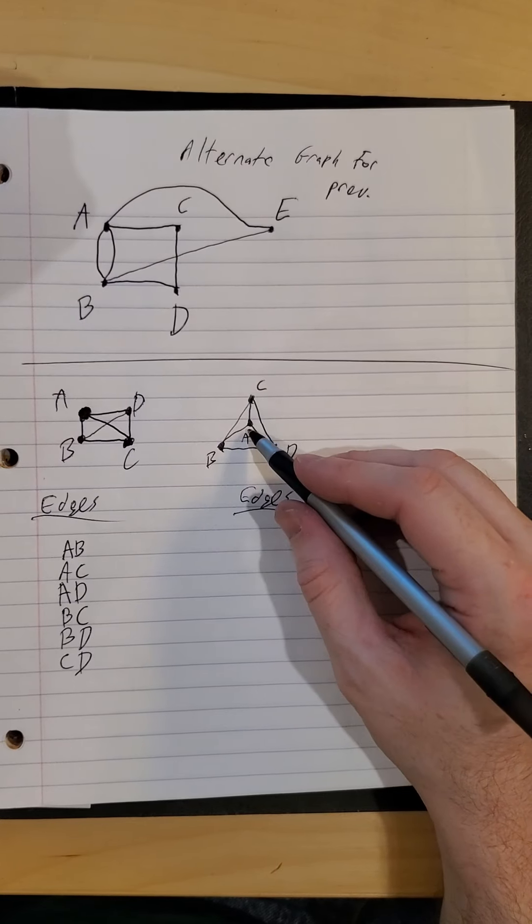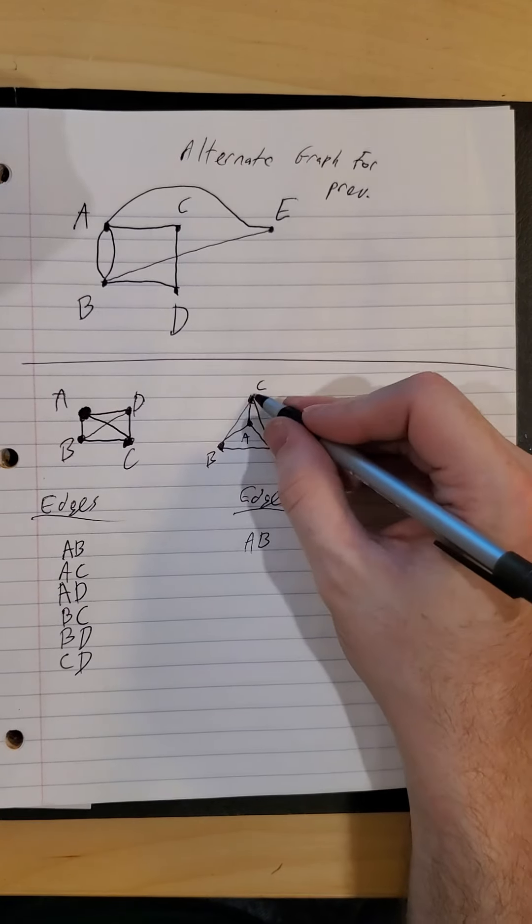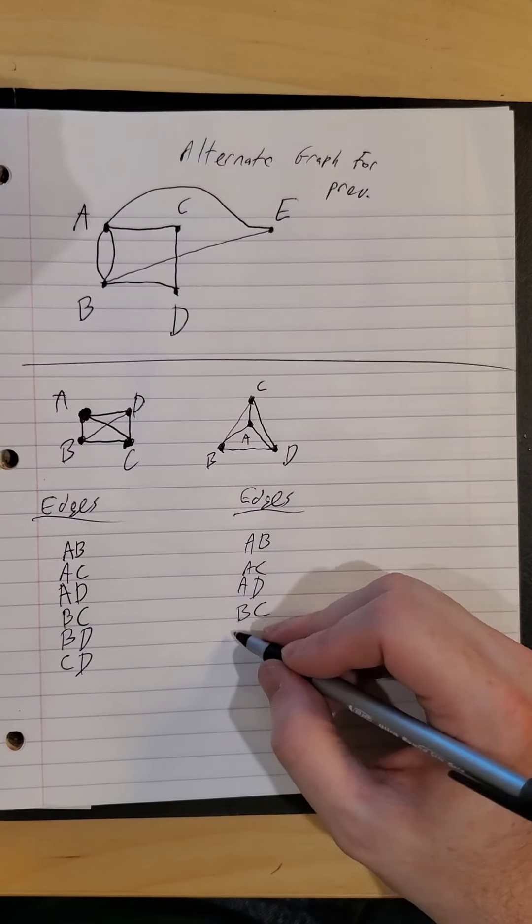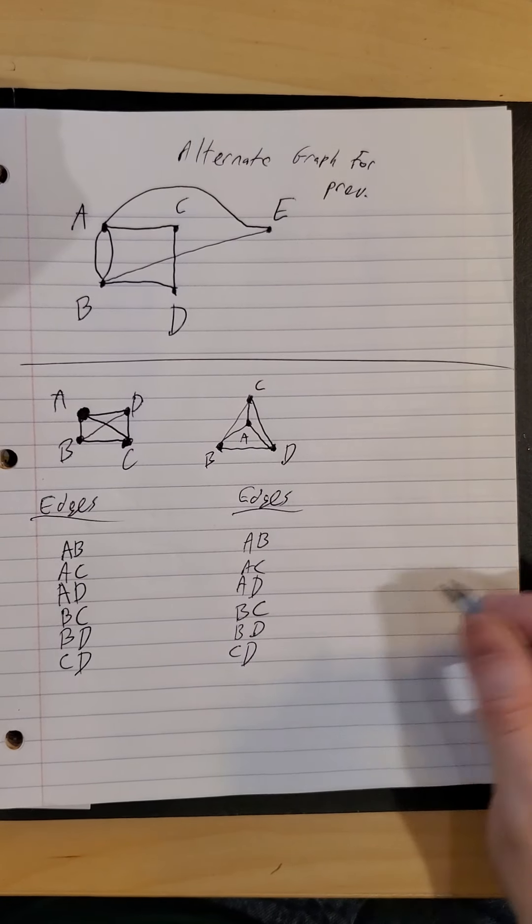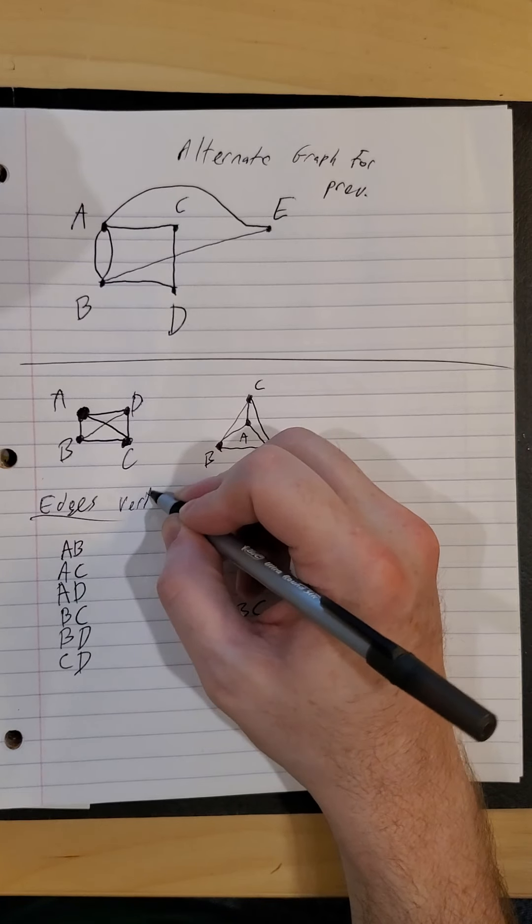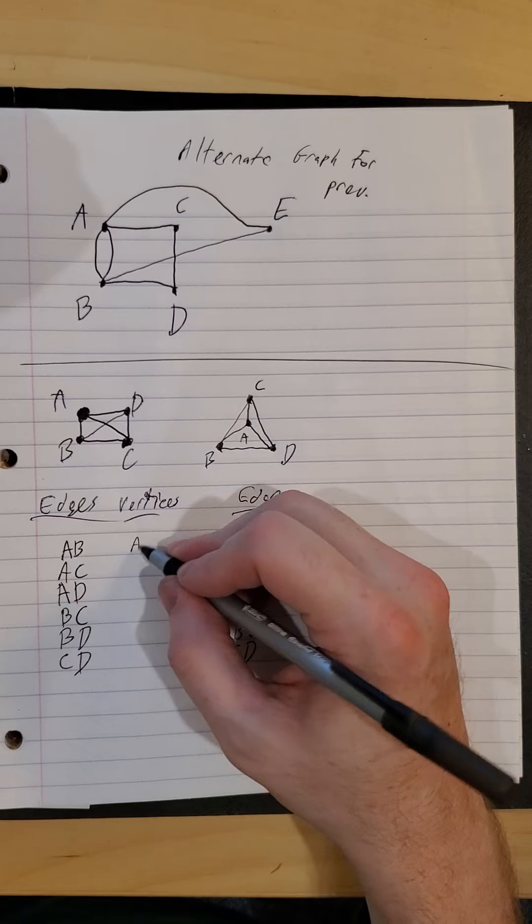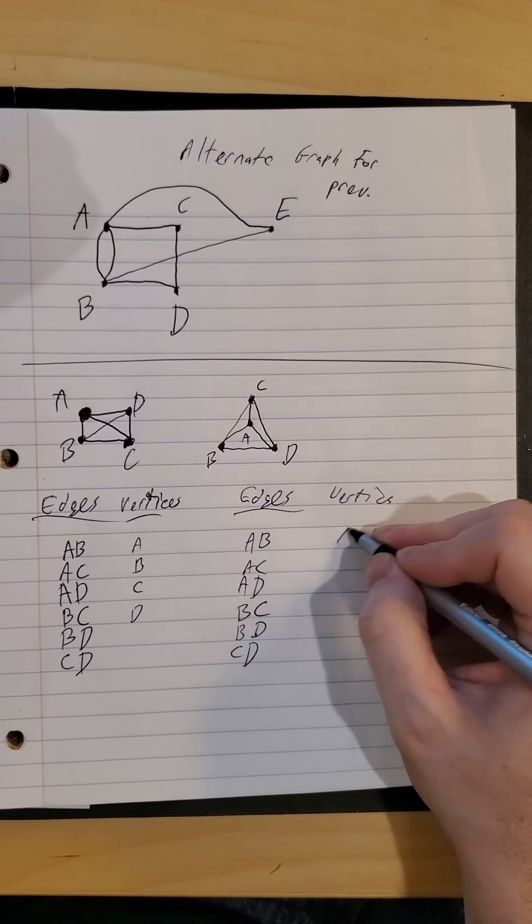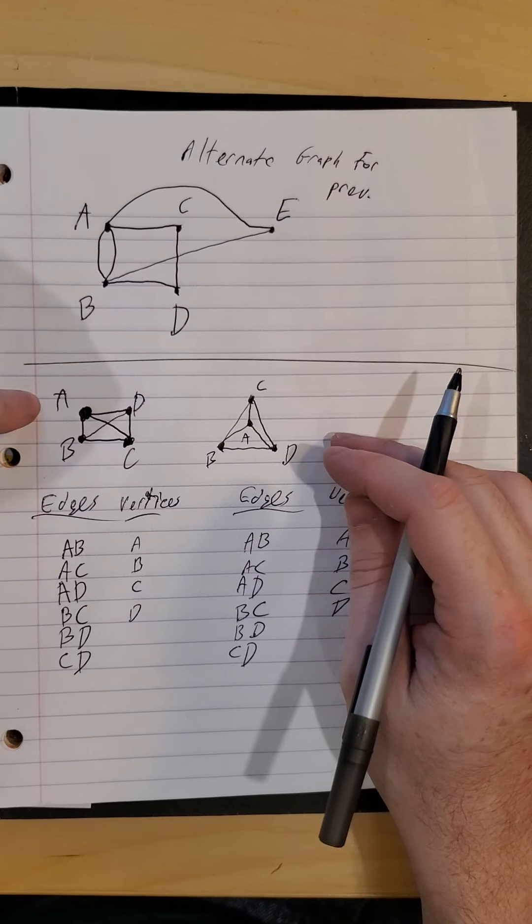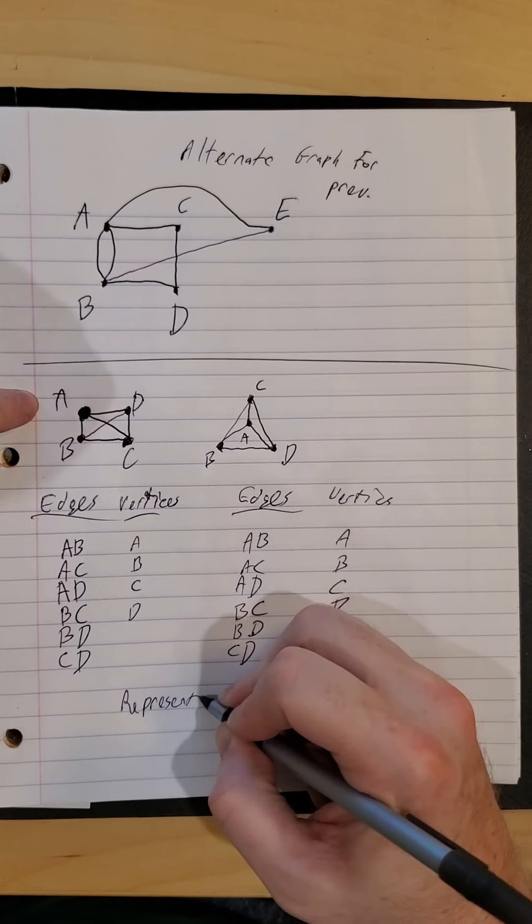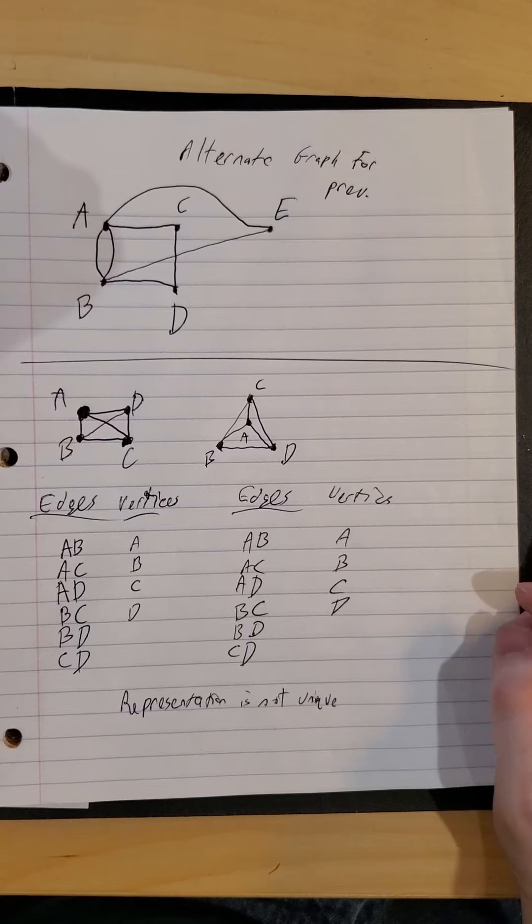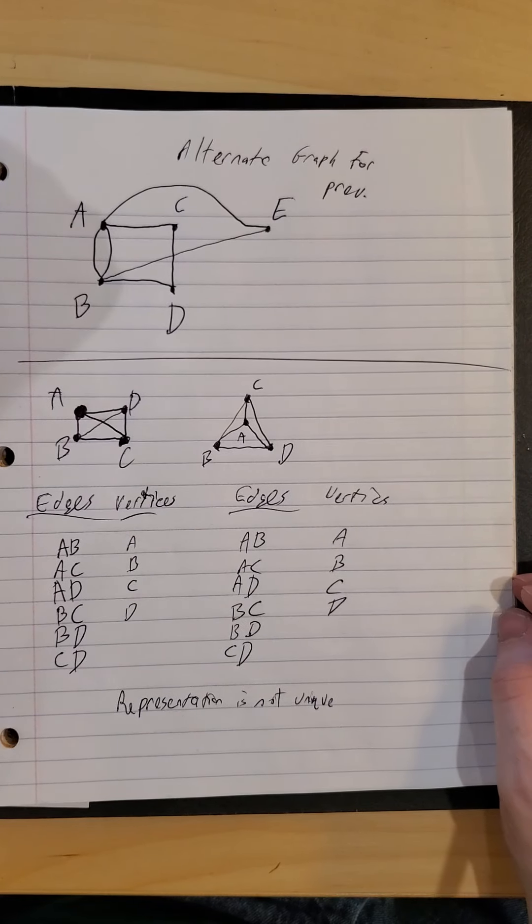As far as graph number two edges that we had. A, B was an edge. A, C was an edge. A, D was an edge. B, C was an edge. B, D was an edge. C, D was an edge. So you might have noticed all of the edges were the same. Vertices we had A, B, C, and D. Vertices we had A, B, C, and D. So this is another idea that the representation is not unique.